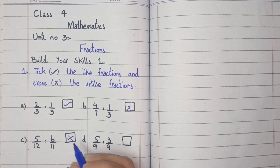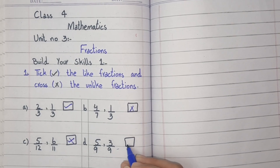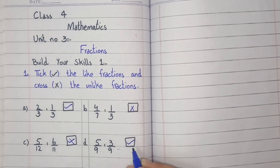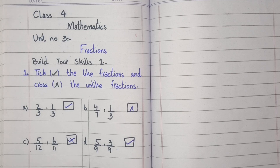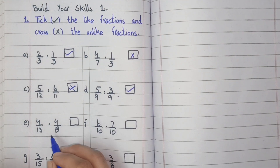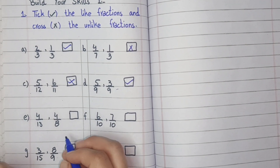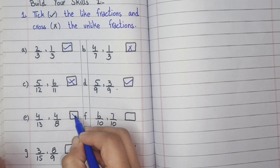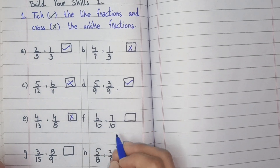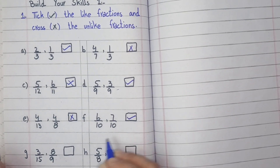The denominators are the same, so this is a like fraction. Four by thirteen and four by eight — unlike fractions. Six by ten and seven by ten — this is a like fraction.